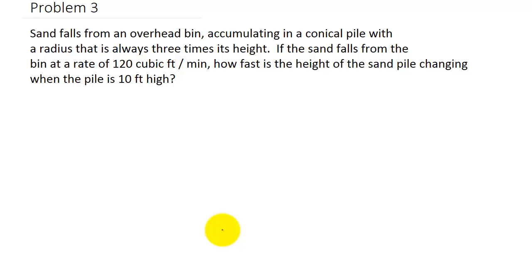So they're telling us how the volume is changing because it's being dumped. The sand is falling at 120 cubic feet per minute. And they want to know how fast the height is changing when the height, which we could call h, is 10 feet.